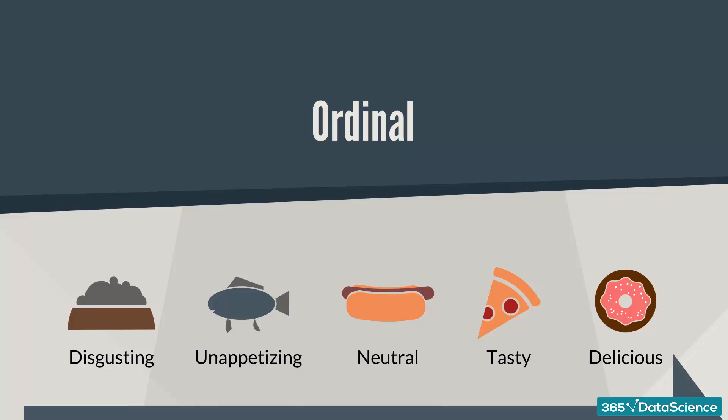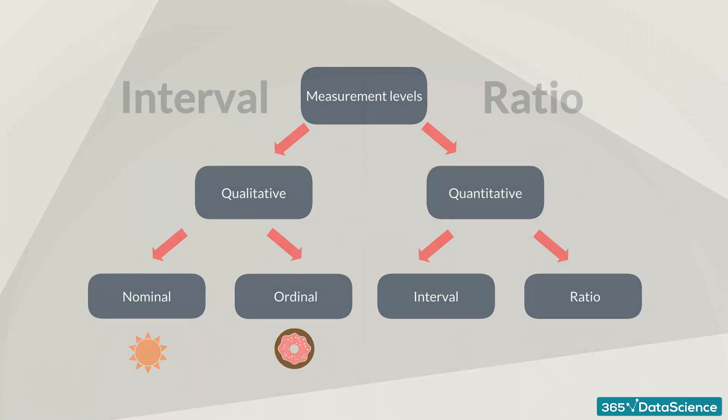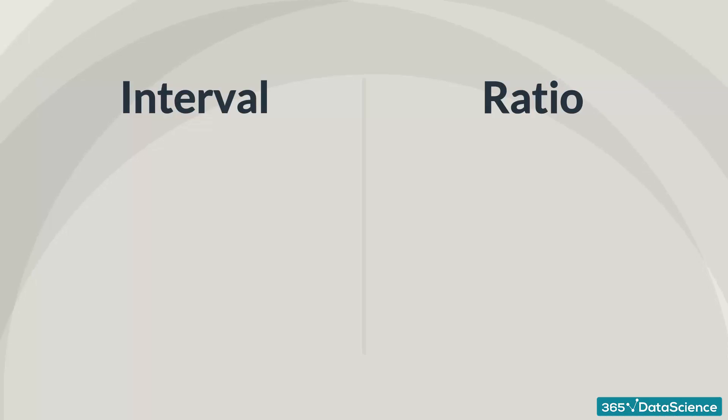So what about quantitative variables? Well, as you may have guessed, they are split into two groups: interval and ratio. Intervals and ratios are both represented by numbers but have one major difference. Ratios have a true zero and intervals don't. For example, length is a ratio variable. You all know that 0 inches or 0 feet means no length.